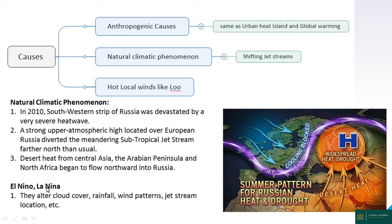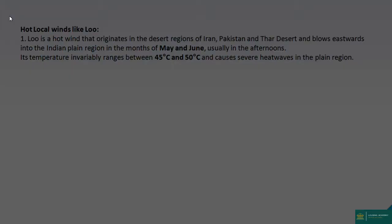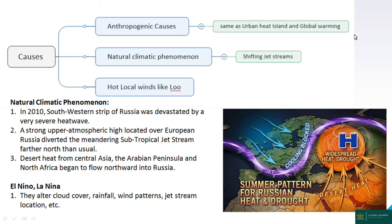Other causes include El Niño and La Niña atmospheric circulation patterns, which alter cloud cover, wind patterns, and jet stream locations. The Indian Ocean Dipole also impacts the monsoon system. Local hot winds like the Loo in India, Iran, and Pakistan, blowing across desert regions, cause excessive temperature rises. Global warming is a significant contributing reason for increasing heat wave frequency.